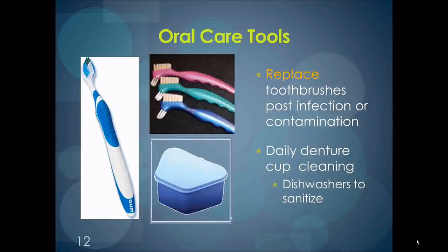These are some tools used for oral care. There are certain times when an oral care item should be discarded for the purpose of infection prevention. For example, any oral care item that goes in the mouth, such as a toothbrush, or that will come directly in contact with something that goes in the mouth, such as a denture brush, should be discarded if it falls on the floor. Another example: after a resident recovers from an illness such as a cold or flu, oral care items including the denture cup, denture brushes, and toothbrush should be discarded.